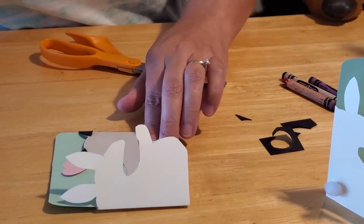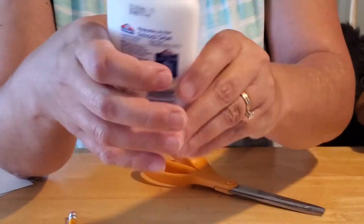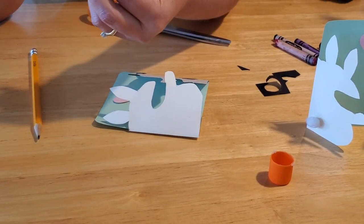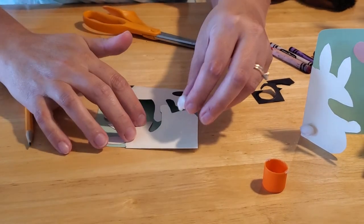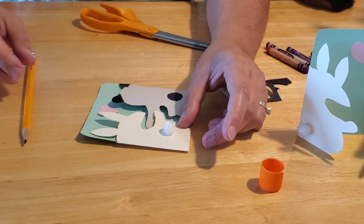And now we'll glue our tail on, like so, right in the middle. Now for our bunny, we're going to use regular glue because we want our pom-pom to stick. I'm just going to put a little bit of glue on there and then push it in there. And you're going to want to let that sit until it thoroughly dries.